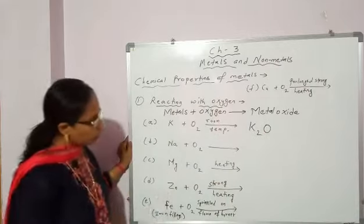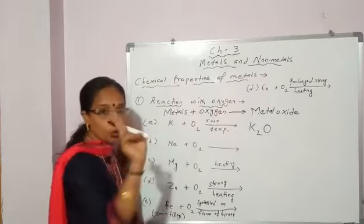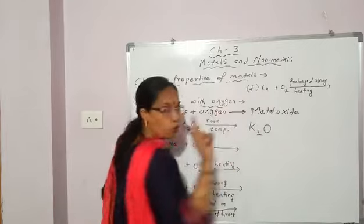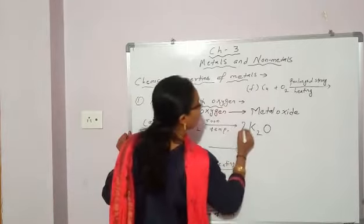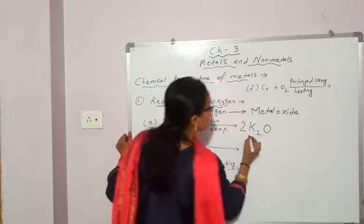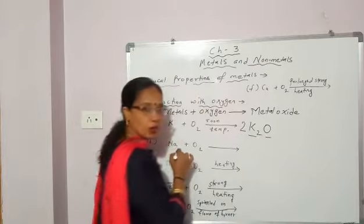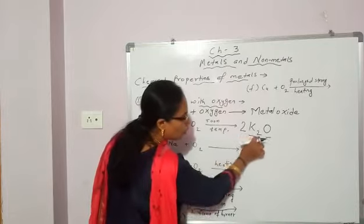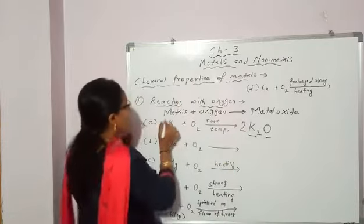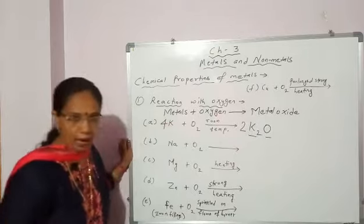Now balance it. How many oxygen atoms on the reactant side? 2. On the product side? 1. In front of the formula you will add 2. Now this 2 is for potassium as well as oxygen. Now potassium becomes 2, so 2 twos are 4. Add 4 here. Now the equation is balanced.